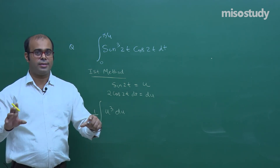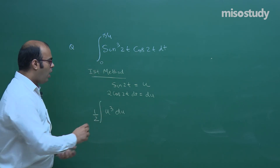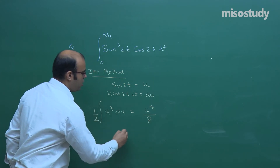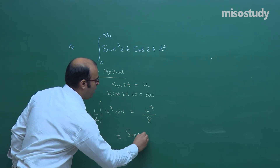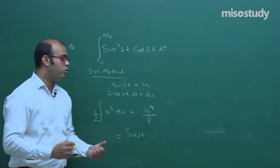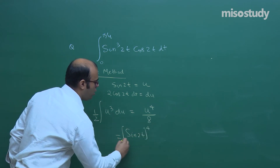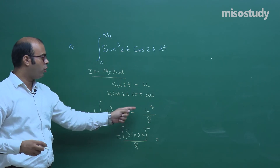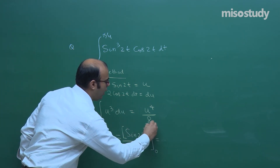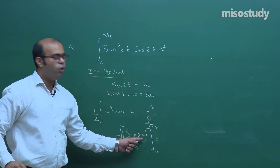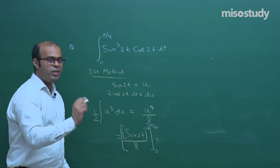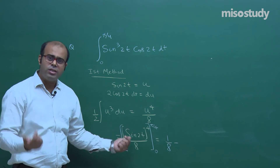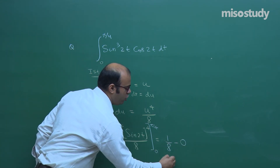Method 1: Do not change the limits. Integrating u³/2 gives u⁴/8. Back-substitute u = sin(2t) to get sin⁴(2t)/8, then apply limits 0 to π/4. At t = π/4: sin(π/2) = 1, so we get 1/8. At t = 0: sin(0) = 0, giving 0. Final answer: 1/8 − 0 = 1/8.